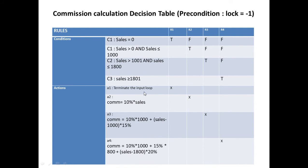The actions for commission are: terminate the input loop; A2 — commission 10% of sales for the first thousand; commission 15% for the next portion; and the fourth action — 10% for the first thousand, 15% for the next 800, and 20% for the remainder beyond 1800. In general: from 0 to 1000 it is 10%, from 1001 to 1800 it is 15%, and if more than 1800 then it is 20%.